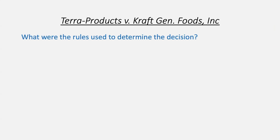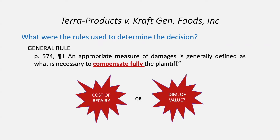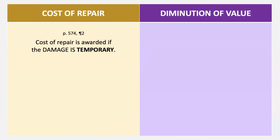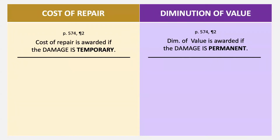The rules for this decision are on page 574. The general rule is that an appropriate measure of damages is what is necessary to fully compensate the plaintiff — making someone whole again but not giving more than actual loss. The specific rules: cost of repair is awarded if the damage is temporary, and diminution of value is awarded if the damage is permanent.